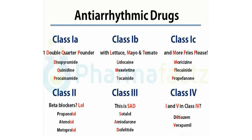Class 1C drugs are also sodium channel blockers, but they do not have any effect on prolongation or shortening of the action potential. Examples — the mnemonic is 'more fries please': moricizine, flecainide, and propafenone. Another mnemonic is 'family planning,' remembering these two drugs: flecainide and propafenone.